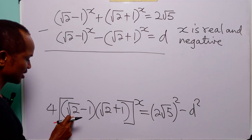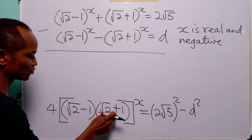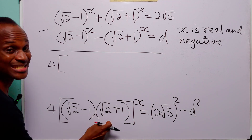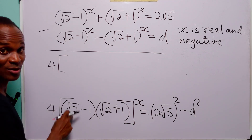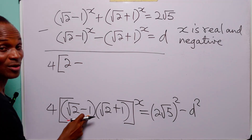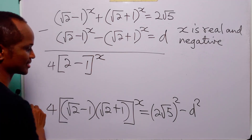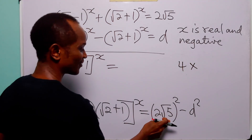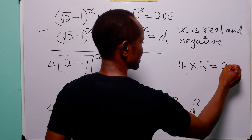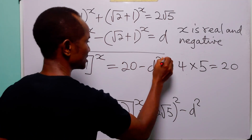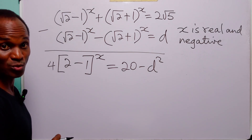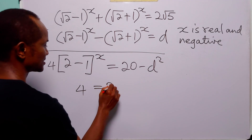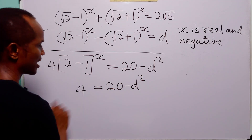Looking at the left side, we see (√2 - 1) multiplied by (√2 + 1), which is also the difference of two squares. So we have √2 squared minus 1 squared, which equals 2 minus 1, equal to 1, raised to the power x. And on the right side, (2√5)² equals 4 times 5, which is 20. So we have 4 times 1^x on the left, which equals 4, and this equals 20 minus d².